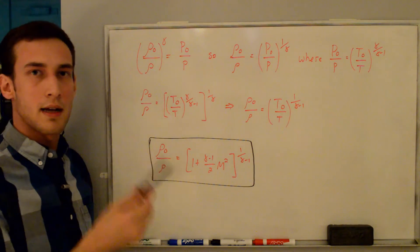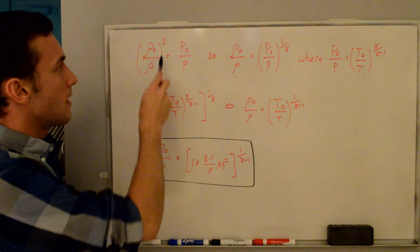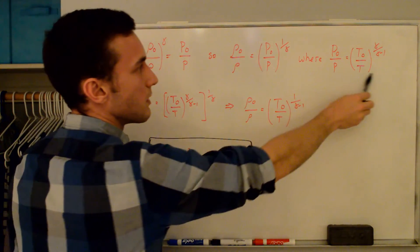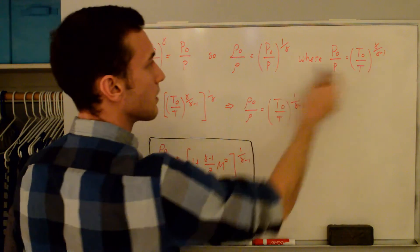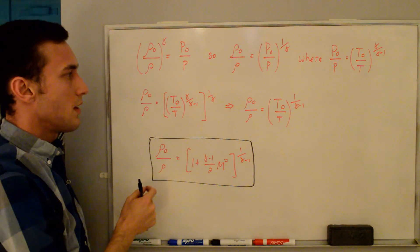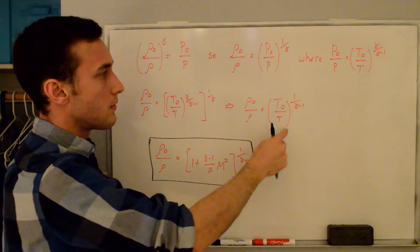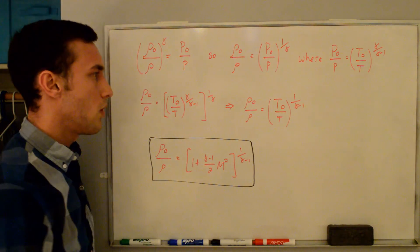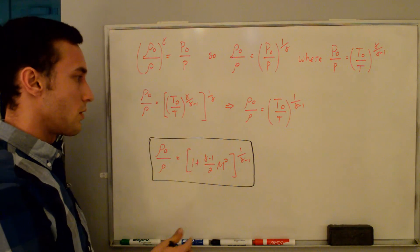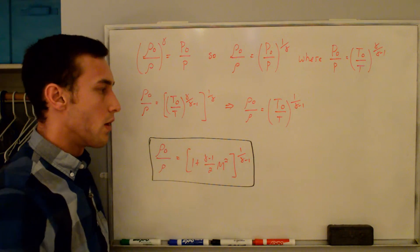Now we find the stagnation to static density ratio. Starting from the isentropic density-pressure relation and bringing the exponent to the other side gives ρ₀/ρ = (P₀/P)^(1/γ). Plugging in the pressure ratio expression and multiplying the exponents — the γ cancels — we get ρ₀/ρ = (T₀/T)^(1/(γ−1)). Substituting the stagnation to static temperature ratio gives: ρ₀/ρ = [1 + (γ−1)/2 · M²]^(1/(γ−1)).